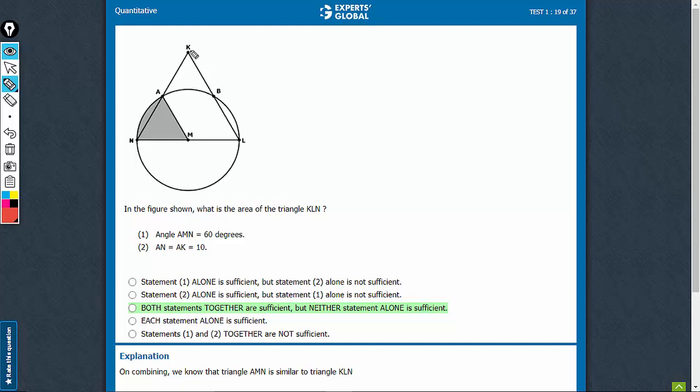The question is asking the area of the complete bigger triangle. Statement 1 only talks about the angle. It doesn't give us any length. Without length, area cannot be determined, so not sufficient.